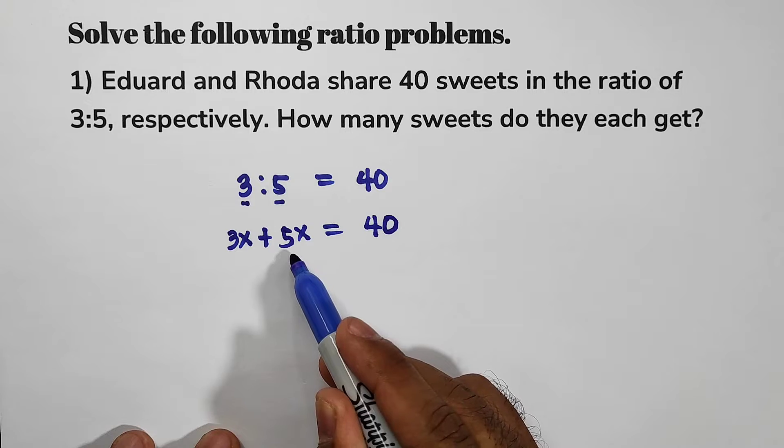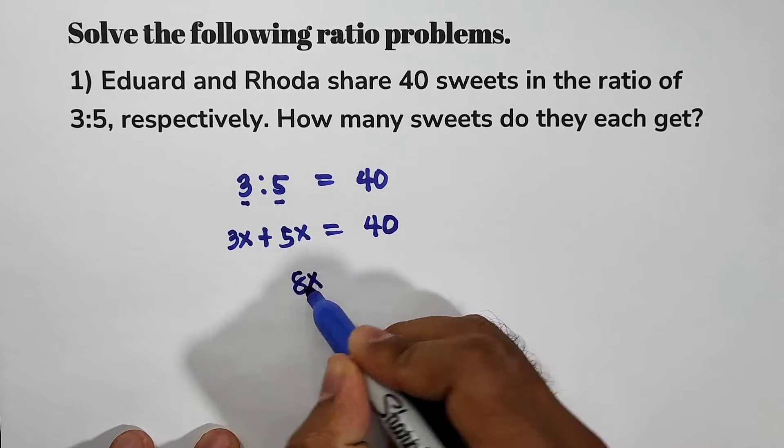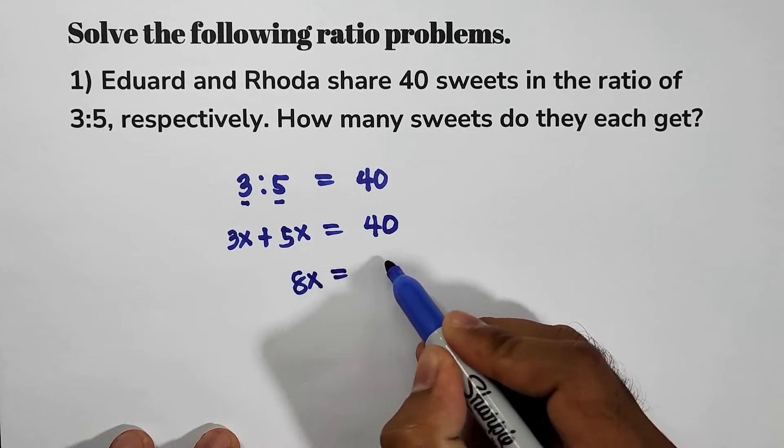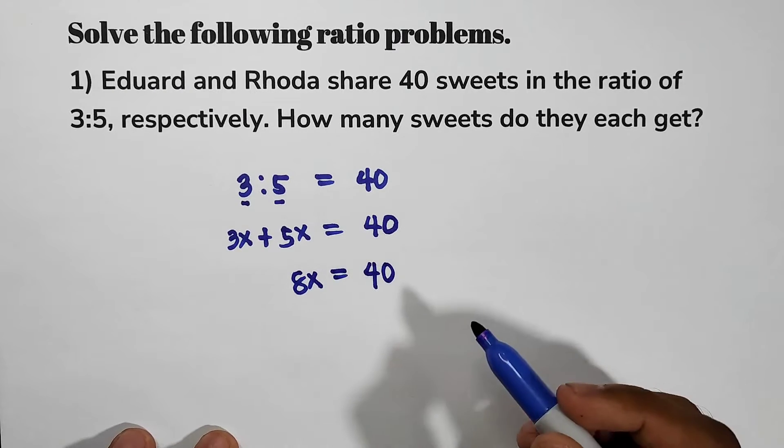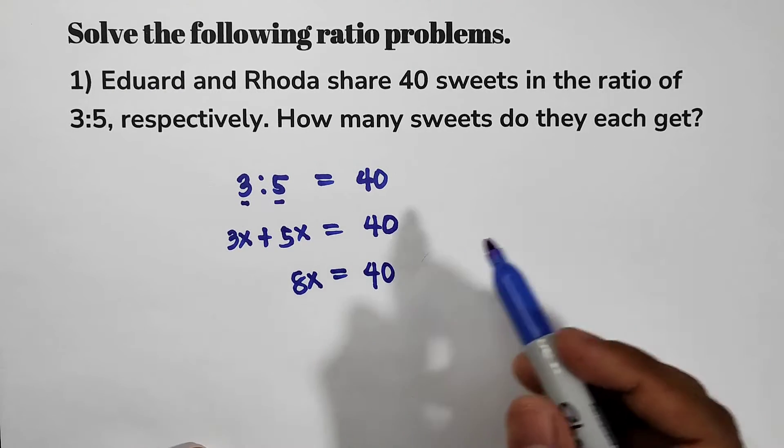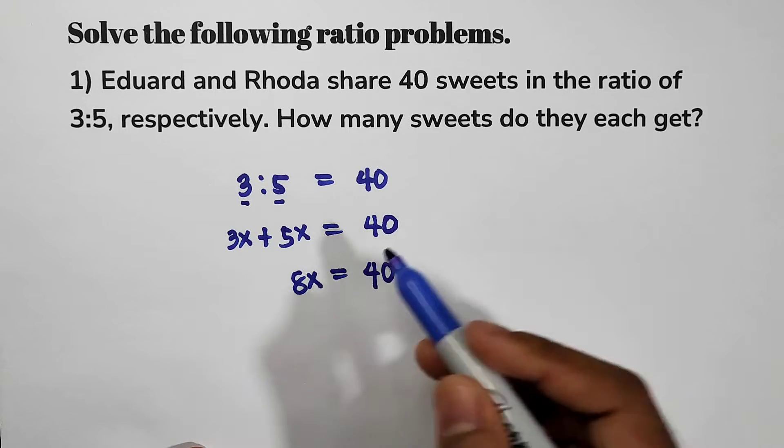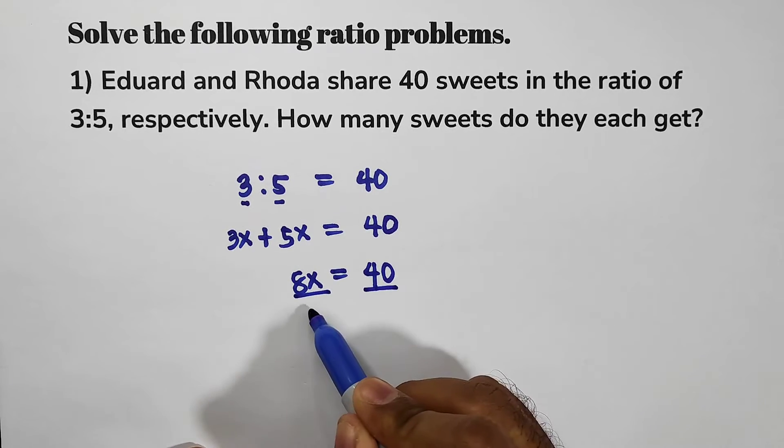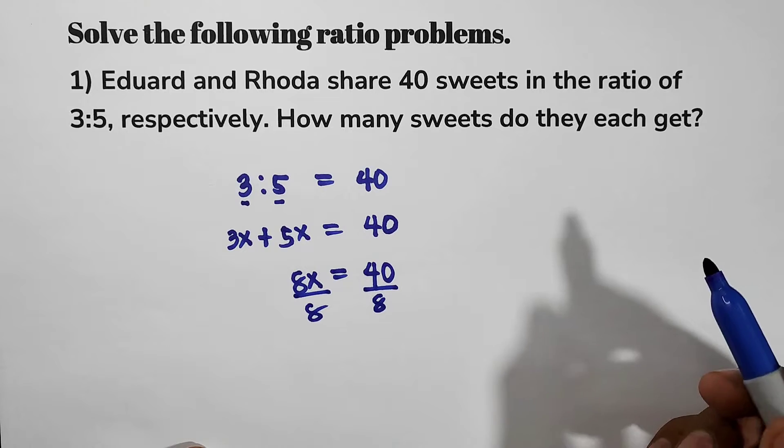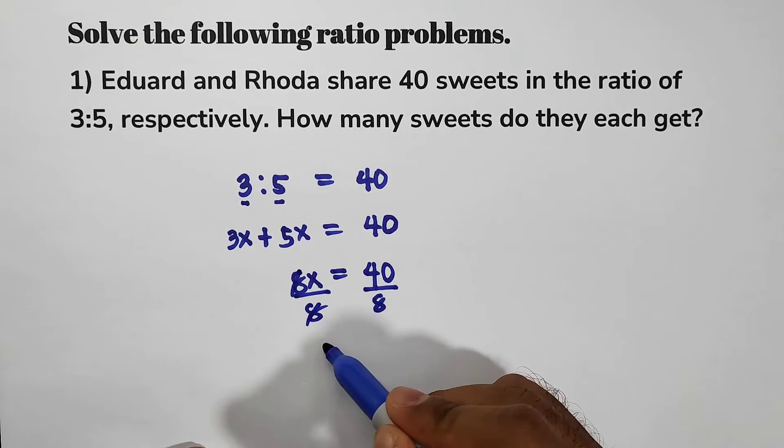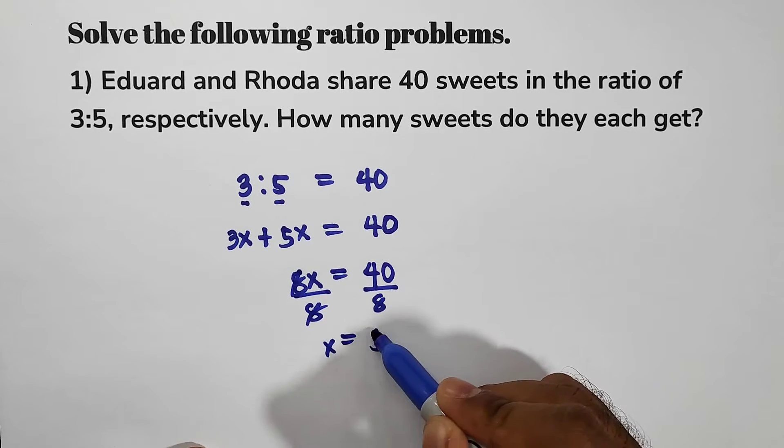So 3x plus 5x, that is equal to 8x, and that is equal to 40. Now, let us solve the value of x. Divide both sides by 8, and then x now is equal to 5.